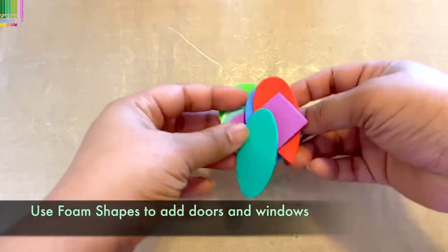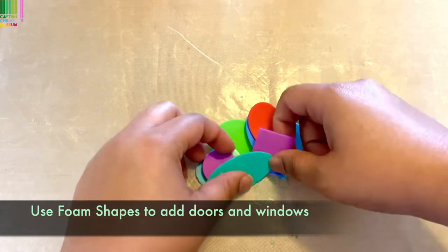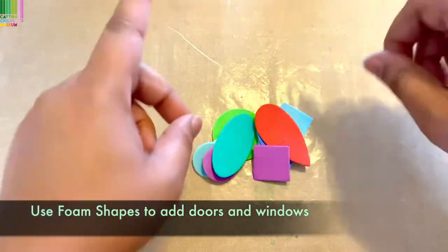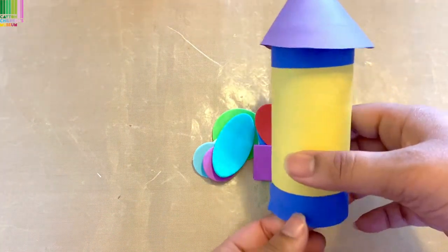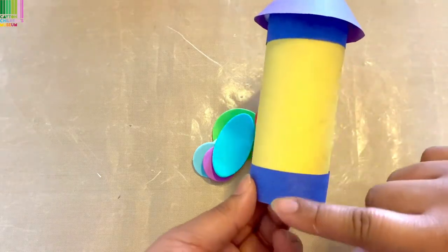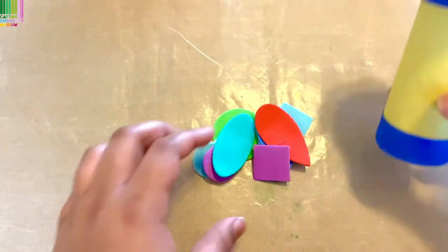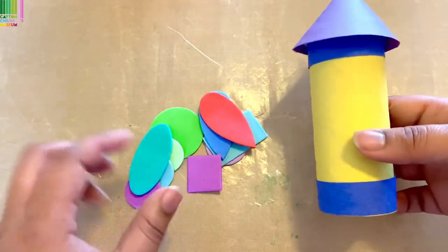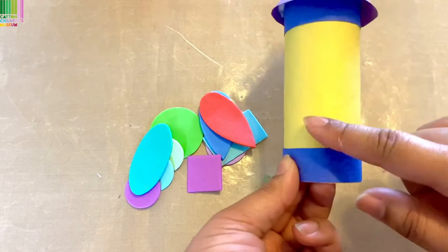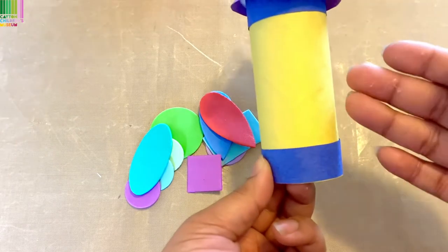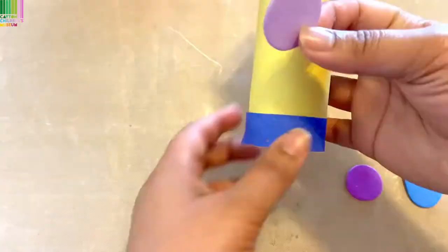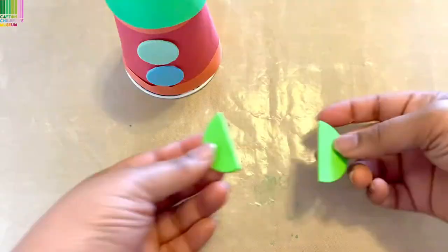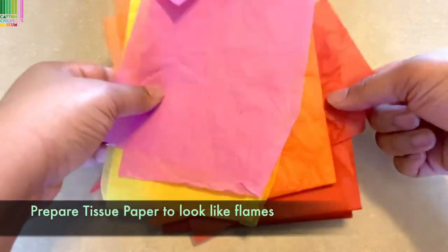Next, we are going to grab our foam shapes and add some details to our spaceships. I'm going to take this one first. And I notice I have yellow, blues, and purples. So I'm going to go ahead and pick out some shapes for the windows and shapes to put on the side.